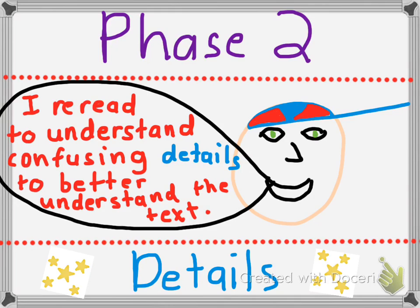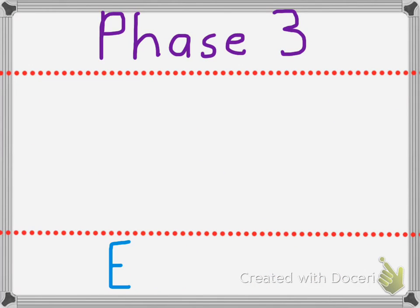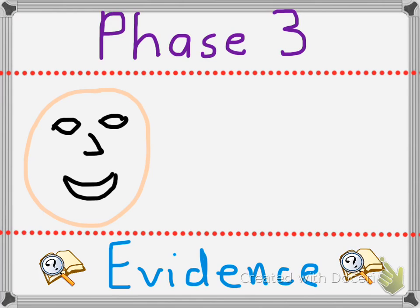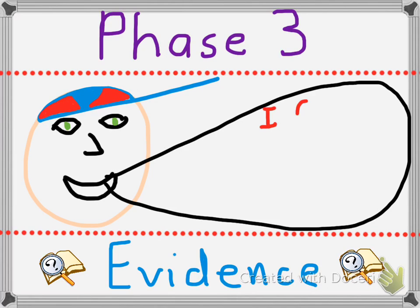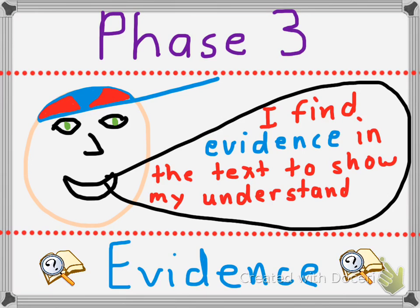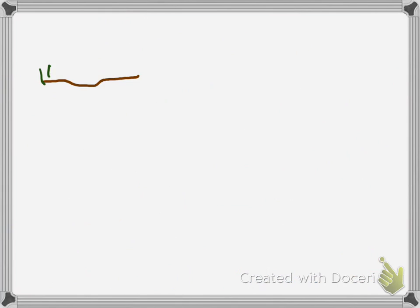Finally, when we show good understanding of the text, we're going to move on to phase three. In phase three, we're going to go ahead and look at the evidence. I find evidence in the text to show my understanding. We are going to be posed some questions, and we're going to have to really go back and reread again to find the answers or to support our opinion to show what we really know.